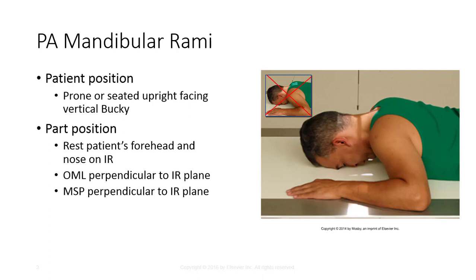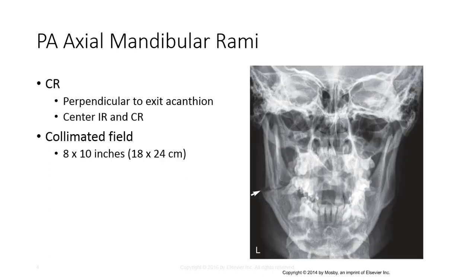For the PA view to visualize the mandibular rami, position the patient prone or seated upright facing the vertical bucky. Rest the patient's forehead and nose on the IR to place the OML perpendicular to the IR plane. The MSP should also be perpendicular to the IR, with the CR perpendicular to exit through the acanthion. Center the IR and the CR with a collimated field of 8 by 10 inches.